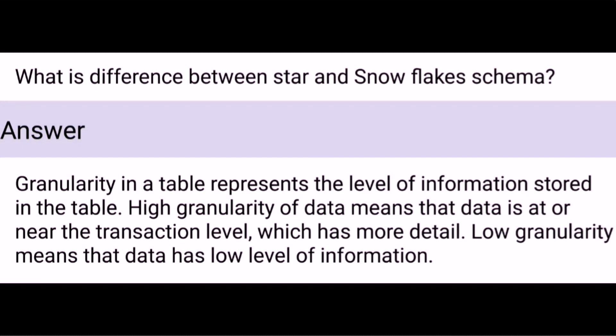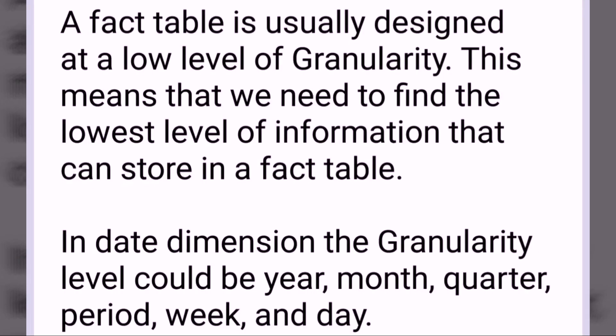What is the difference between Star and Snowflake schema? Granularity in a table represents the level of information stored in the table. High granularity of data means that data is at or near the transaction level, which has more detail. Low granularity means that the data has a low level of information. A fact table is usually designed at a low level of granularity, meaning we need to find the lowest level of information that can be stored in a fact table.